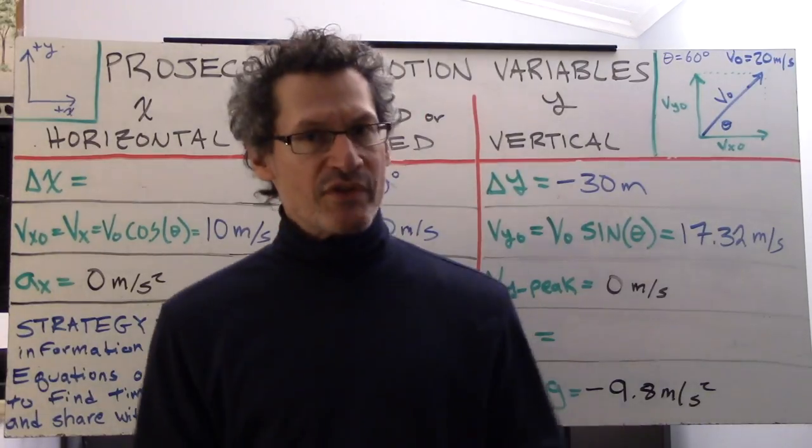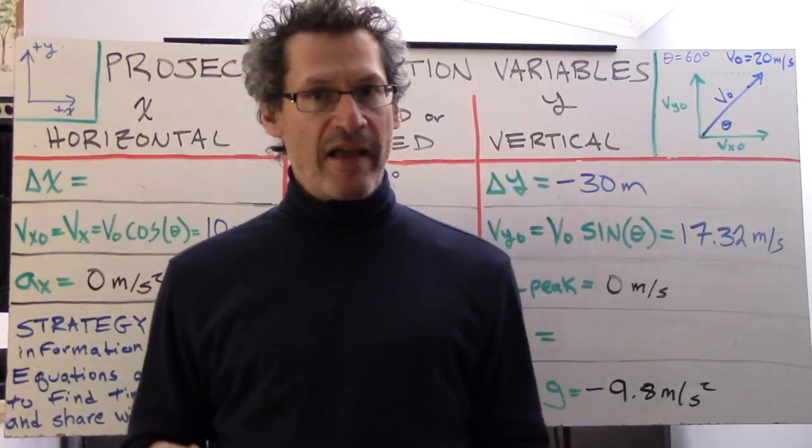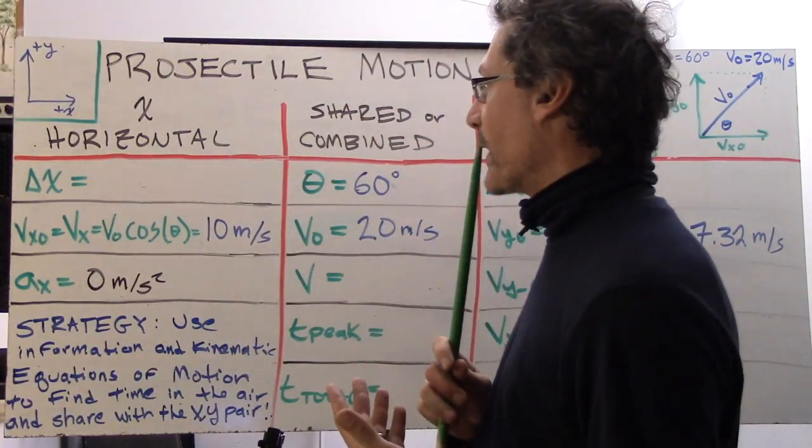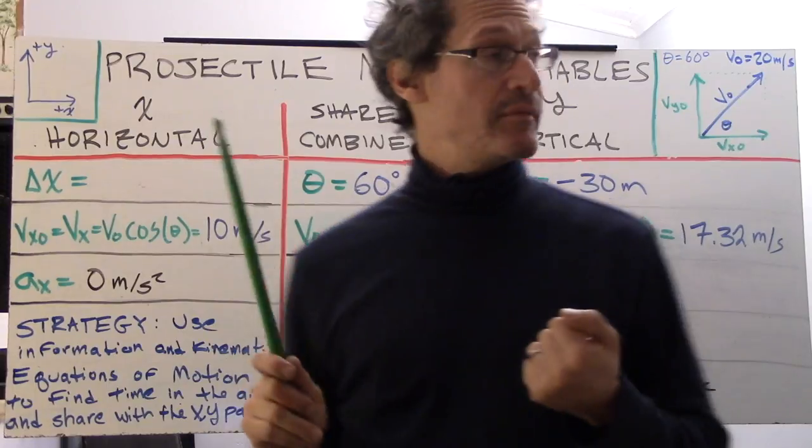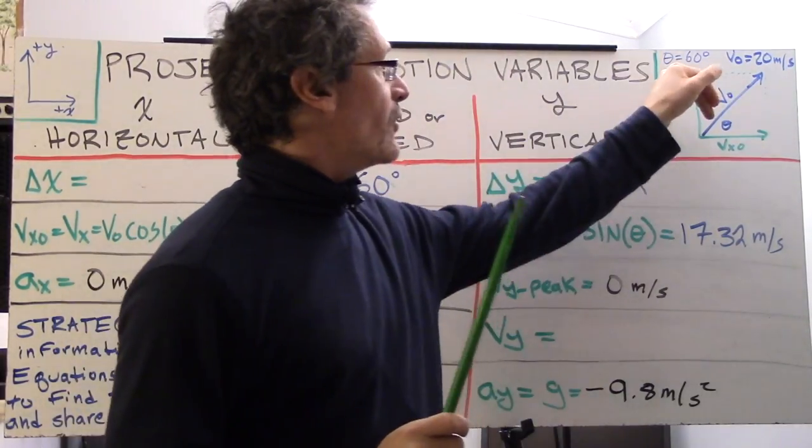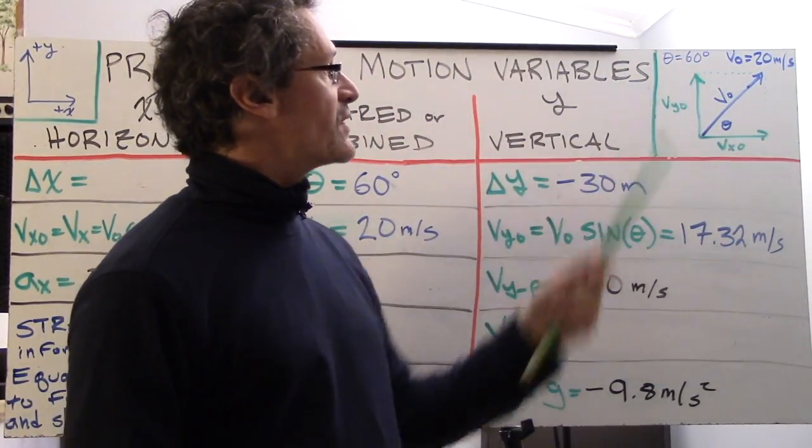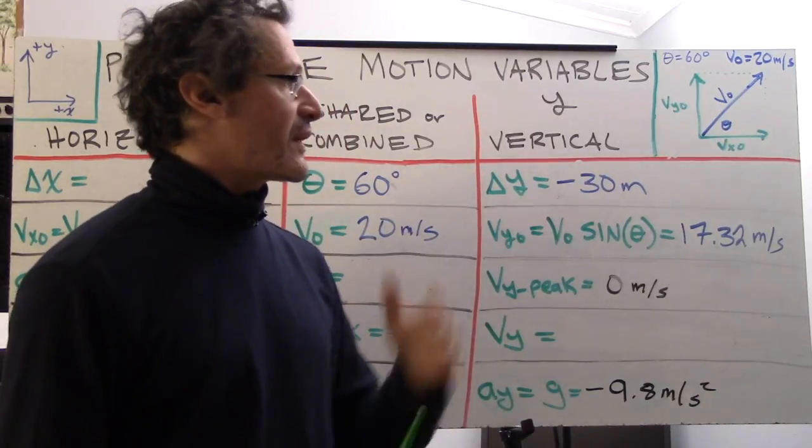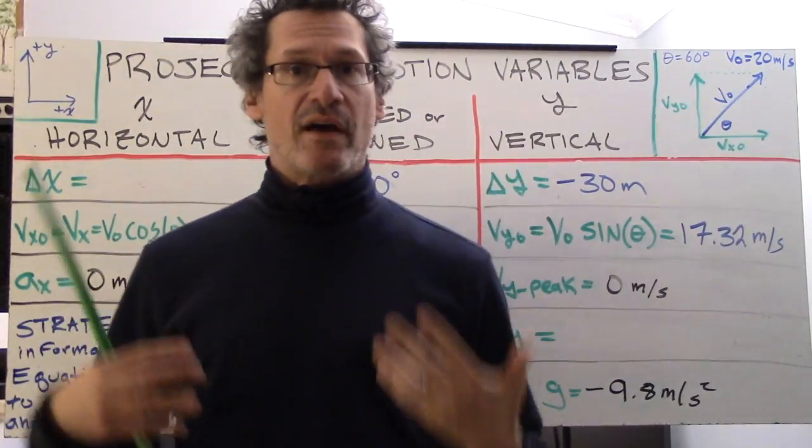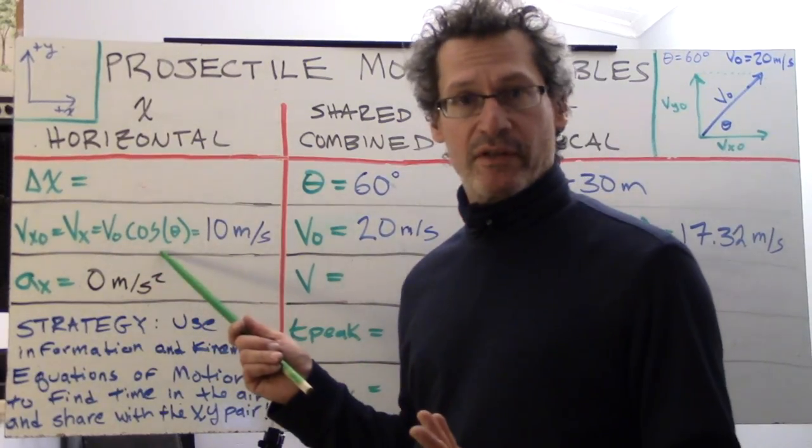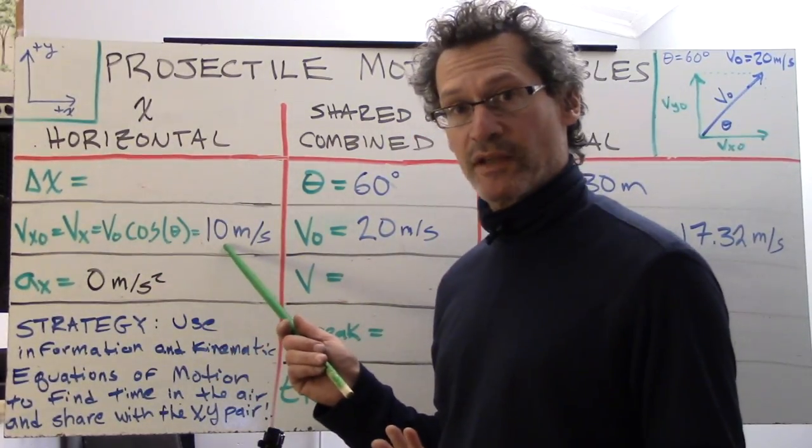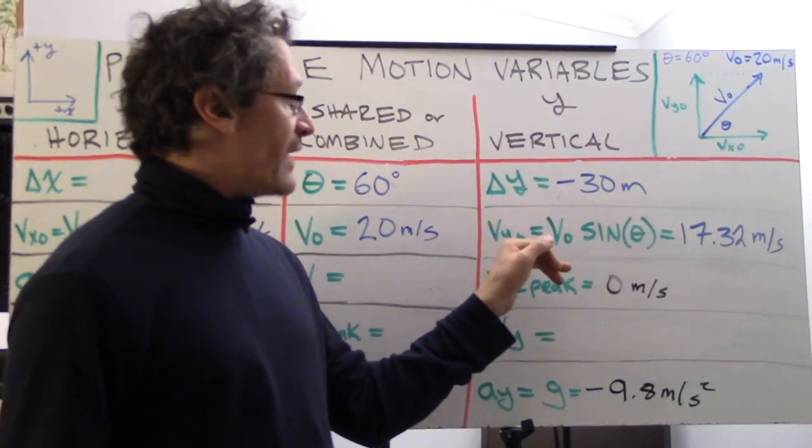Here's our matrix of projectile motion values. Our coordinate system is positive up, positive to the right. The angle is 60 degrees, theta equals 60 degrees. Our v naught is 20 meters per second. That breaks up into v x naught and v y naught components. V x naught is v naught times the cosine of 60 degrees, which gets us 10 meters per second. V y naught is v naught times the sine of 60 degrees or 17.32 meters per second.